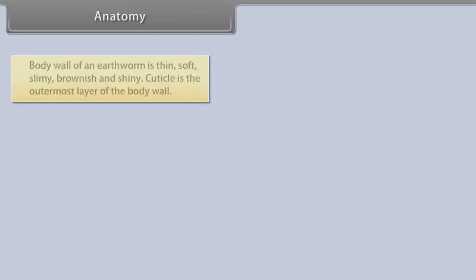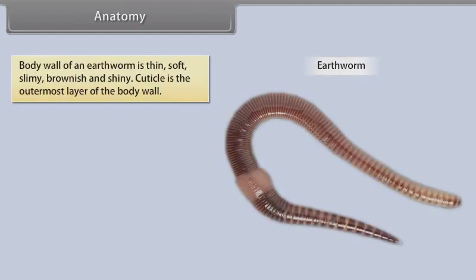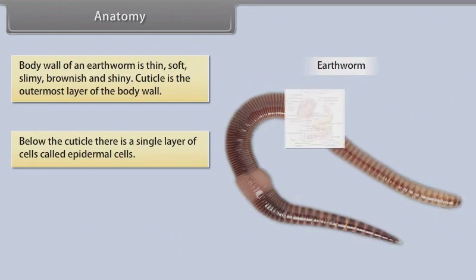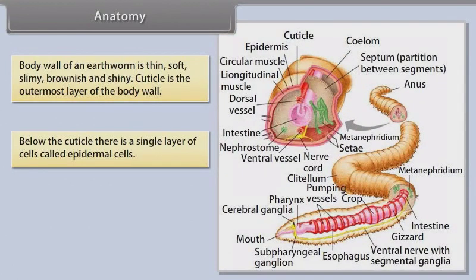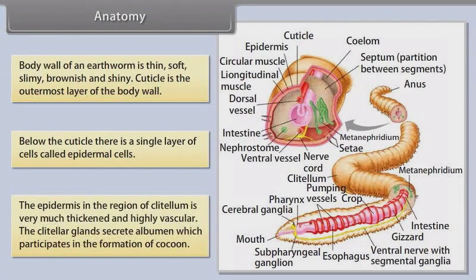Anatomy. The body wall of an earthworm is thin, soft, slimy, brownish and shiny. The cuticle is the outermost layer of the body wall. Below the cuticle there is a single layer of cells called epidermal cells. The epidermis in the region of the clitellum is very much thickened and highly vascular. The clitellar glands secrete albumin, which participates in the formation of cocoon.